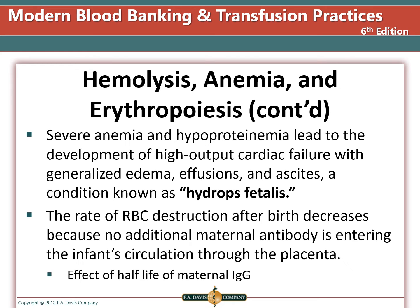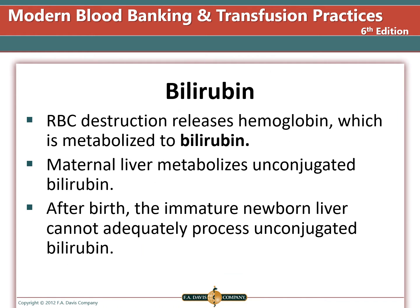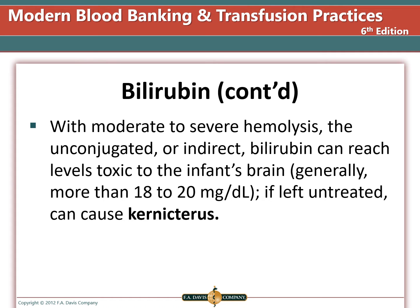After birth, the rate of red cell destruction decreases because no additional maternal antibodies enter the infant's circulation through the placenta. Red blood cell destruction releases hemoglobin, which is metabolized to bilirubin. The maternal liver can metabolize unconjugated bilirubin during pregnancy, but after birth the immature newborn's liver cannot adequately process it. With moderate to severe hemolysis, unconjugated bilirubin can reach toxic levels above 18 mg/dL. If untreated, this can cause kernicterus, or brain damage.